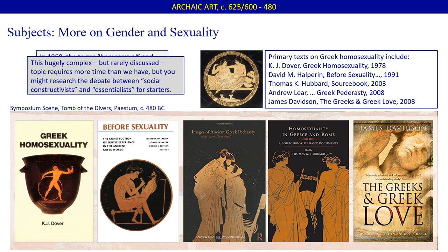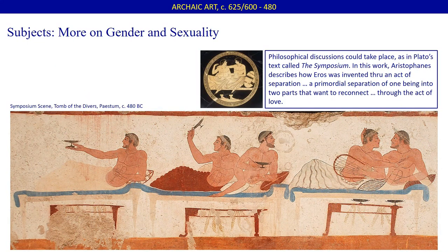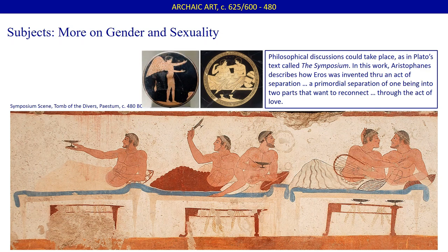We needn't rely exclusively on intuition or even logic, for there is additional textual evidence from ancient Greece that supports the idea of sexual orientation. It brings us back full circle to the symposium. In addition to drinking, entertainment, and socializing, true philosophical discussions could take place at the symposia. You may know the word from Plato's famous text simply titled The Symposium. In this work, the character Aristophanes describes how Eros was invented through an act of separation — a primordial separation of one being into two parts that want to reconnect. But the reconnection can no longer take place in a literal sense; instead, it's through the act of love. Eros is the Greek word for one of the four types of love, specifically erotic or romantic love. Eros, or love, is personified as Aphrodite's son, whom the Romans called Cupid.